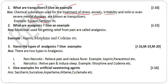Examples of tranquilizers are equanil and serotonin — these are the most important examples. What are analgesics? Give an example. Medicines used for getting relief from pain are called analgesics, also known as pain killers. Examples include aspirin, morphine, codeine, etc.